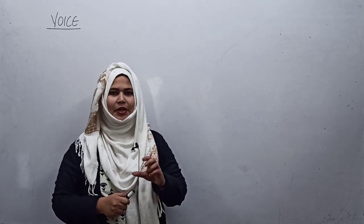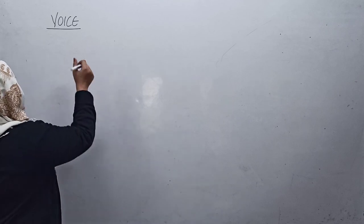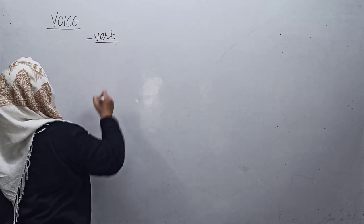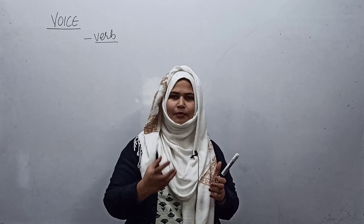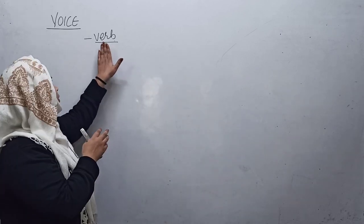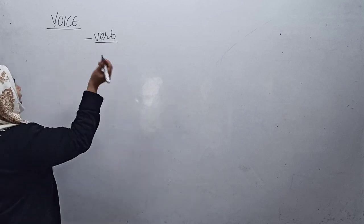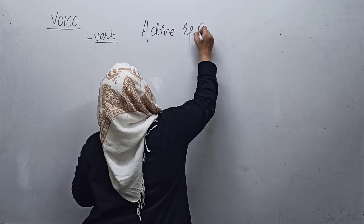Good morning students. Today we are going to start with voice. Voice is one of the most important topics for English grammar that we have to undertake for any competitive exam. Voice is something that tells you about your verb. Verb is an action word — it tells us what a subject or an object is performing or doing. So voice is directly or indirectly related to the verb. Our topic is active and passive voice.